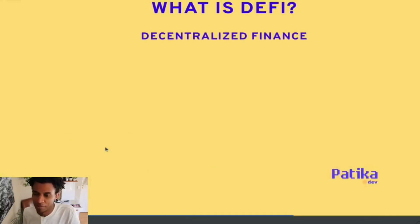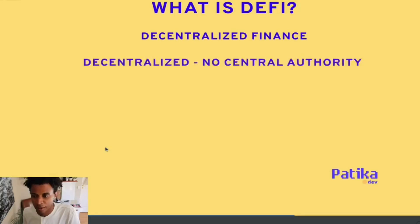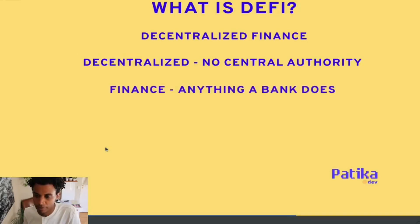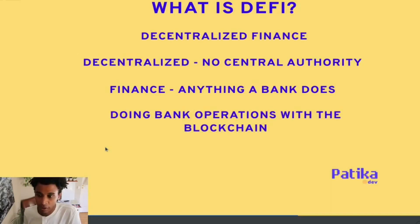First question: what is DeFi? Well, it's decentralized finance. Let's look at it word by word. Decentralized means there's no central authority — no one controlling exactly who can participate and how they can. And finance is basically anything a bank can do or does. So if you put those together, DeFi is just doing bank operations with the blockchain to back it up, which provides the decentralization part of DeFi.